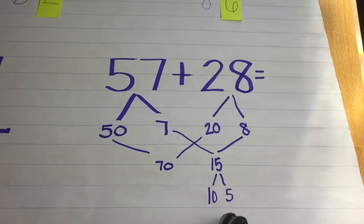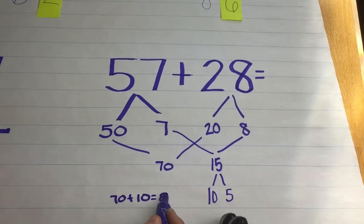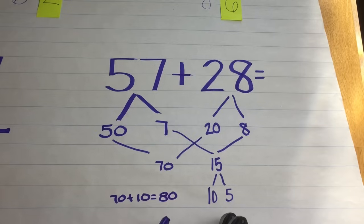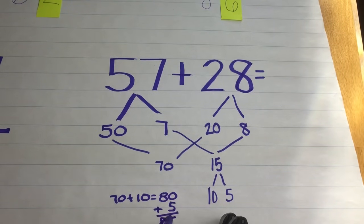From there, the mental math is pretty easy. You're going to take that 70 plus 10, which brings you 80. What's left over is that 5, so 80 plus 5 is 85.